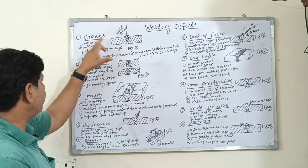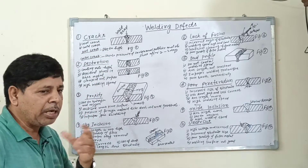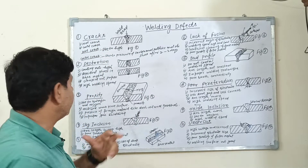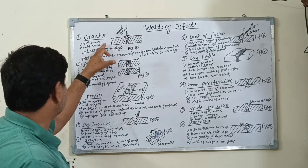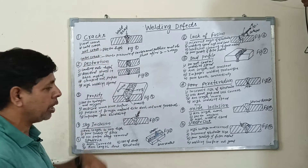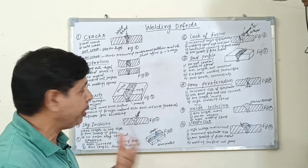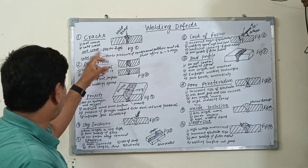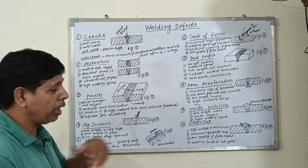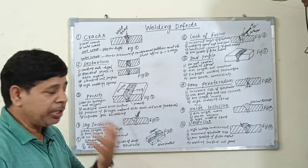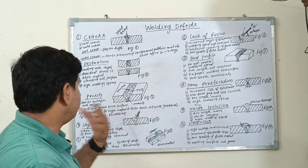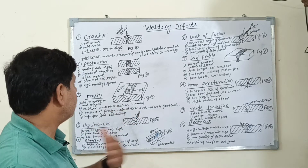Number one is cracks. A crack is one type of welding defect. There are different types: hot crack, cold crack, internal crack, external crack, and surface crack. A hot crack occurs due to high restraint on the molten metal.